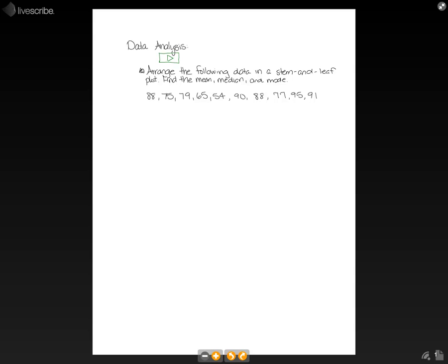For our data, the first thing I'm going to do is reorder it from least to greatest. So we have 54, 65, 75, 77, 79, 88, 88 again, 90, 91, and 95. If we count to make sure, we see we have 10 originally and 10 at the end, just to double-check we have all our numbers included.